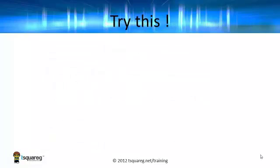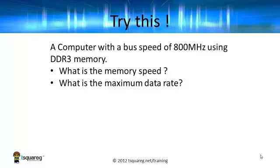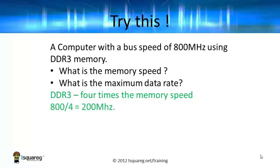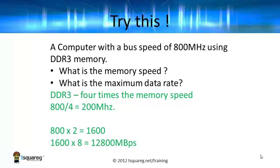Why don't you try this one? A computer with a bus speed of 800 MHz is using DDR3 memory. What is the memory speed and what is the maximum data rate? The memory speed has been multiplied to give us a bus speed because we're using DDR3 memory, which means it must be multiplied by a factor of 4. The actual memory speed is therefore 200 MHz. To work out the maximum data rate, take the 800 MHz, multiply it by 2, then multiply it by 8 — and there is the maximum data rate of 12,800 MB per second.